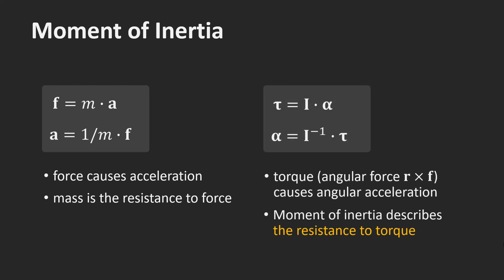Tau equals i times alpha. Tau is a torque, which is an angular force r cross f, where r is the offset to the center of mass of the point where the force is applied. Applying a torque causes an angular acceleration alpha. Solving for the angular acceleration shows that the moment of inertia describes the resistance of a body to torque. For a larger moment of inertia, it takes a larger torque to cause the same angular acceleration.